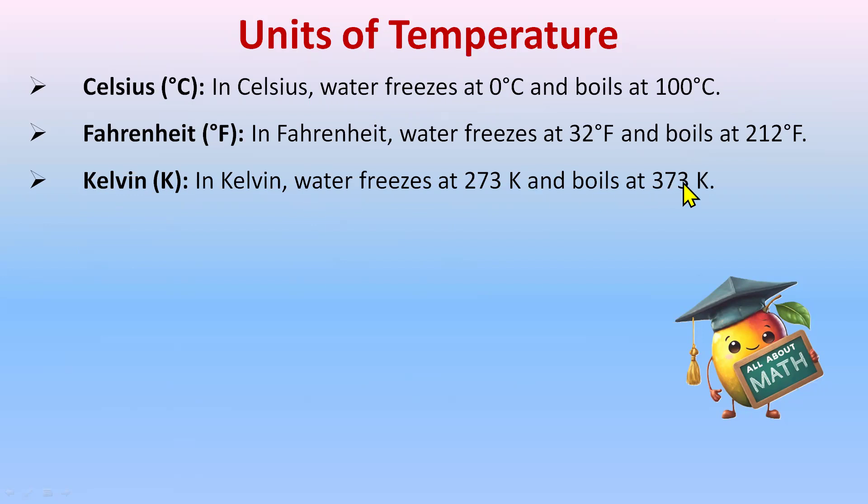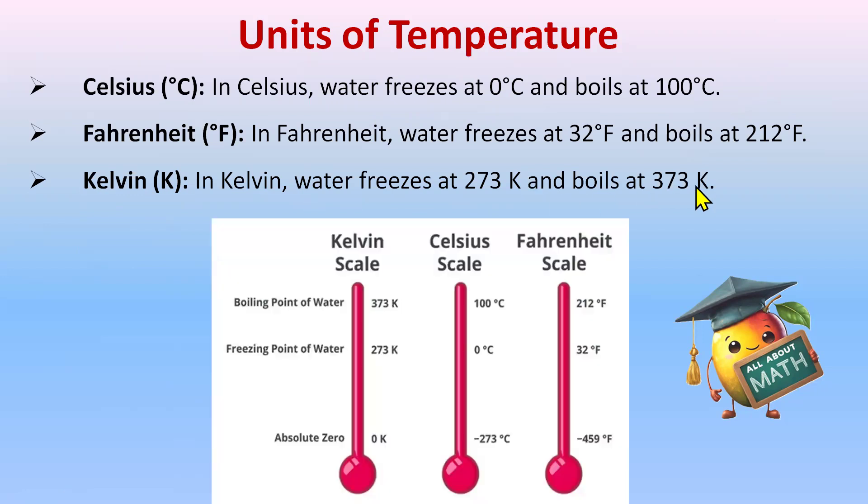These are the three scales, and the absolute zeros are: Kelvin scale starts with zero Kelvin, Celsius starts with minus 273 degrees Celsius, and the Fahrenheit scale starts from minus 459 degrees Fahrenheit.